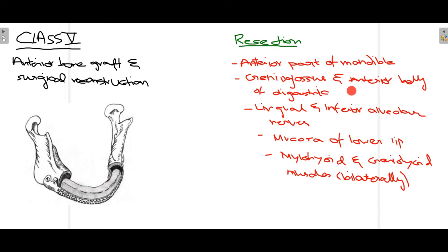In Class 5, the genioglossus and anterior belly of the digastric muscles are also removed — the genioglossus is attached at the mental spine and the digastric at the digastric fossa. The lingual and inferior alveolar nerves are also compromised. The mucosa of the lower lip may be affected if the pathology involves it anteriorly. The mylohyoid and geniohyoid muscles are removed bilaterally, as mylohyoid forms the floor of the mouth.